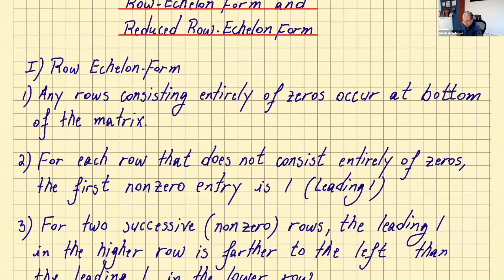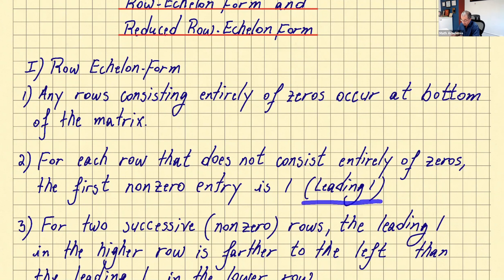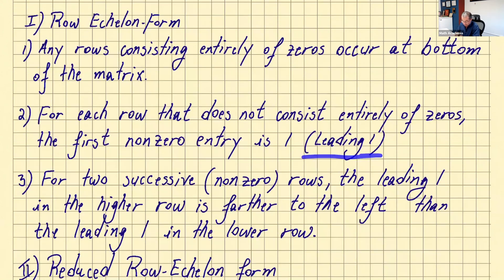First: row echelon form. There are three conditions. Condition one: any rows consisting entirely of zeros occur at the bottom of the matrix. Condition two: for each row that does not consist entirely of zeros, the first non-zero entry is one — and we call that the leading one.